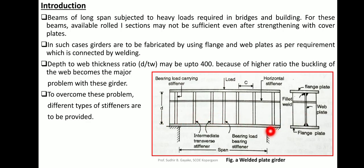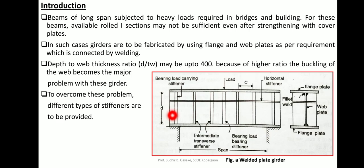Looking at the elevation along the length of the girder: the top and bottom flange plates are visible, and the double-line vertical and horizontal markings represent stiffeners. A stiffener provided exactly above the support is called an End Bearing Stiffener, abbreviated EBS. End bearing stiffeners are provided on either side of the web thickness at the support location.